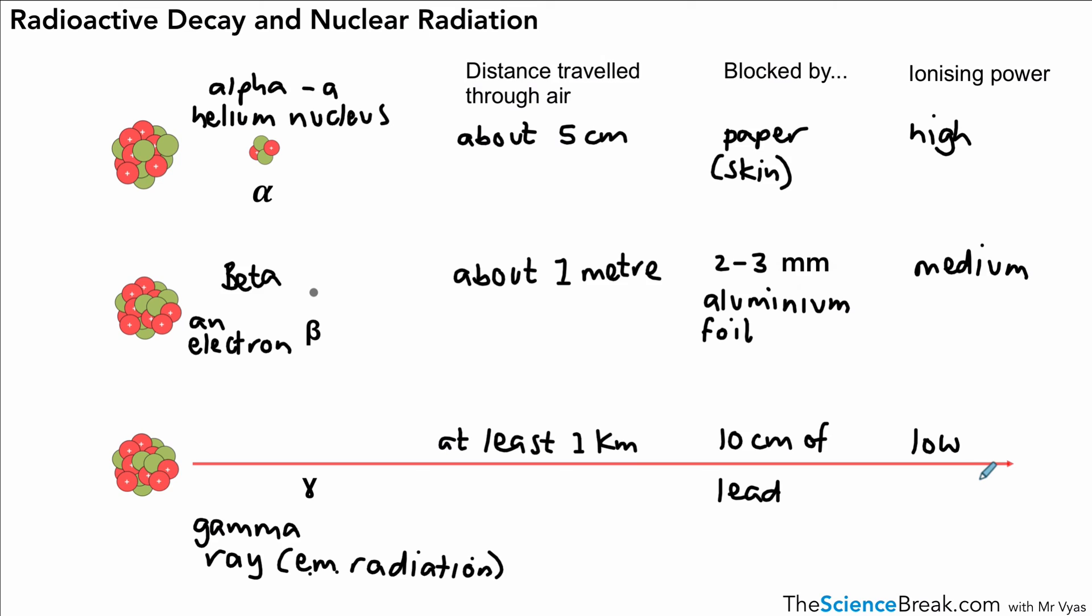We can add the charges for each. So an alpha particle is two plus, a beta particle is one minus, and the gamma rays have no charge at all.